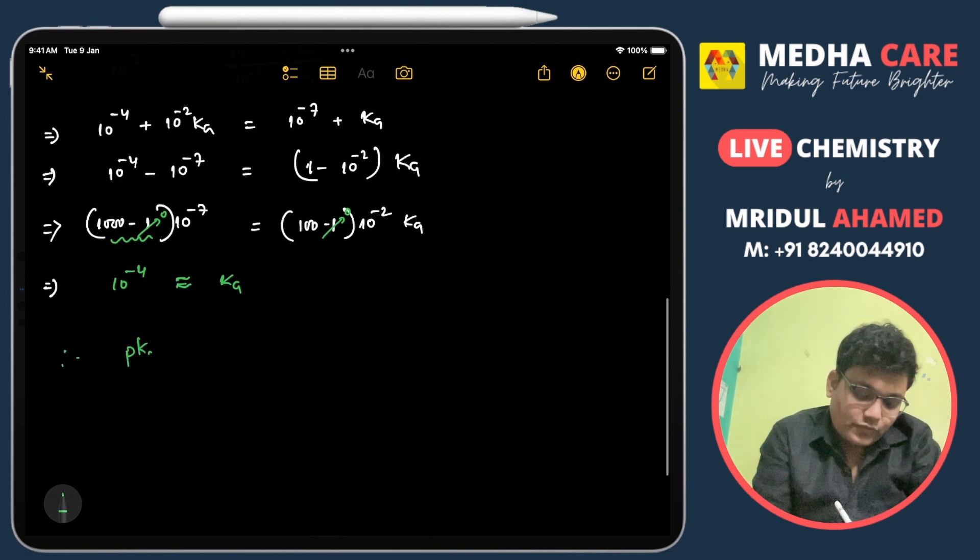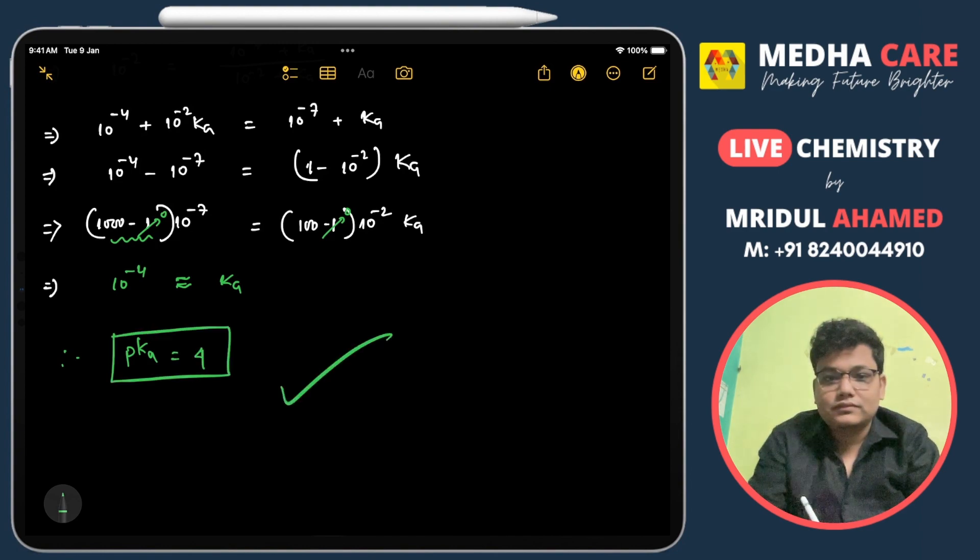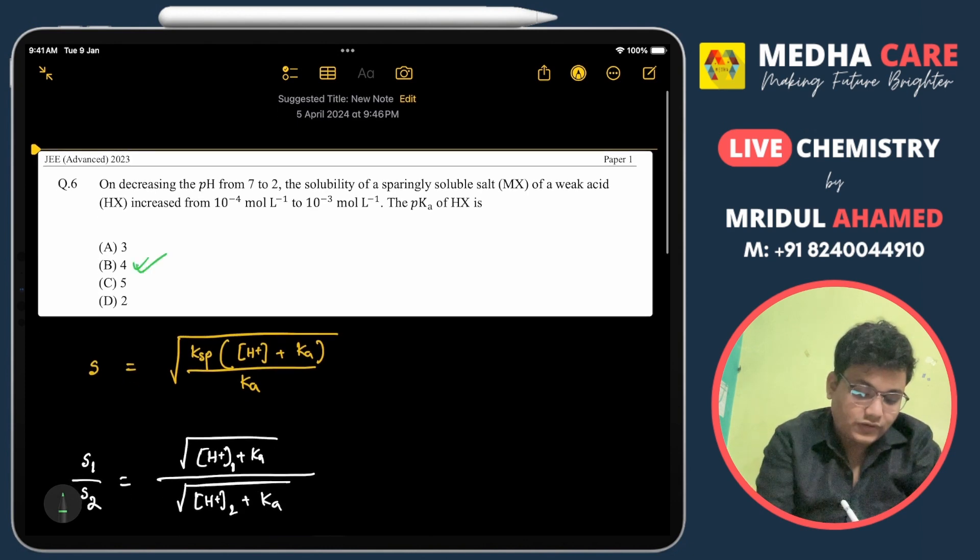So we have to find out pKa, so pKa will be 4. The correct answer for this question is 4.